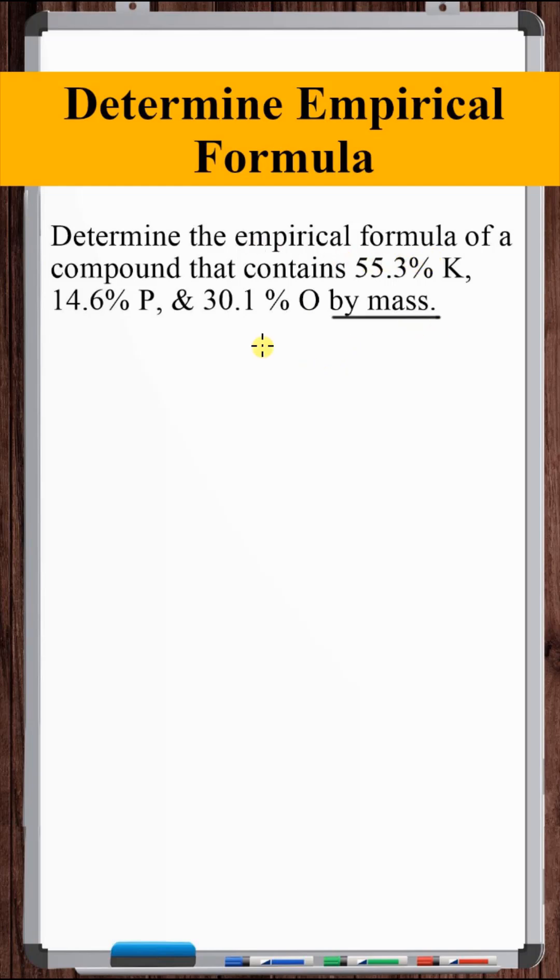So the empirical formula, we need to know the relative number of atoms. We can assume we have one gram of this compound. It doesn't matter how much we assume.